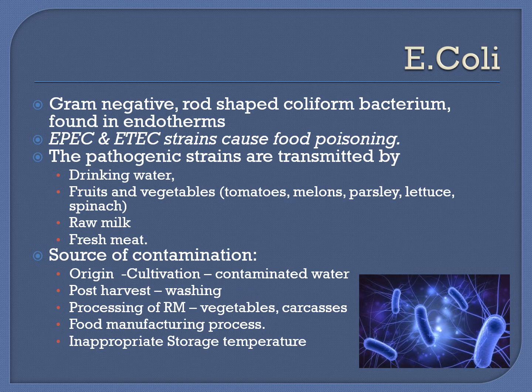The second pathogen is E. coli, a gram-negative, rod-shaped coliform bacterium commonly found in the lower abdomen of endotherms. Specific strains such as EPEC and ETEC cause food poisoning. Primary transmission sources include drinking water, raw milk, fruits and vegetables such as tomatoes, melons, and parsley, as well as fresh meat.